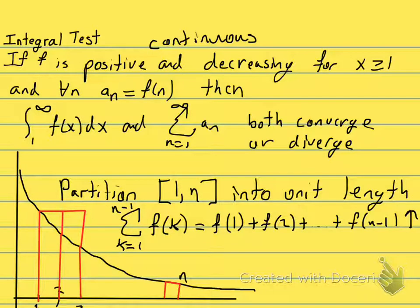And because the lengths are unit length, for like this first rectangle here, the height is f(1) and the width is 1, so the area of that is just f(1). So this is the area of all of those rectangles, the upper rectangles.